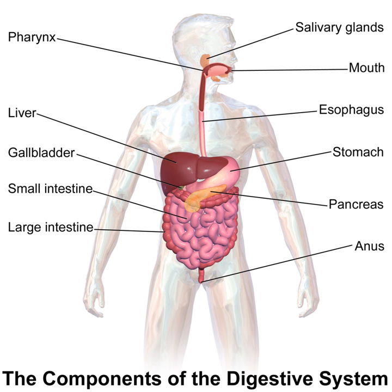The gastric phase takes 3 to 4 hours. It is stimulated by distension of the stomach, presence of food in the stomach, and decrease in pH. Distension activates long and myenteric reflexes, which activates the release of acetylcholine, stimulating the release of more gastric juices. As protein enters the stomach, it binds to hydrogen ions, which raises the pH of the stomach, and inhibition of gastrin and gastric acid secretion is lifted. This triggers G-cells to release gastrin, which in turn stimulates parietal cells to secrete gastric acid — about 0.5% hydrochloric acid, lowering the pH to 1 to 3. Acid release is also triggered by acetylcholine and histamine.